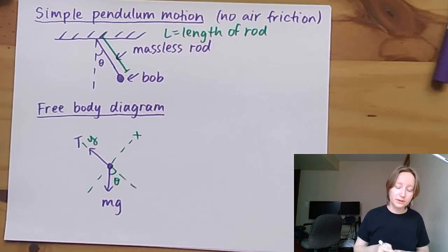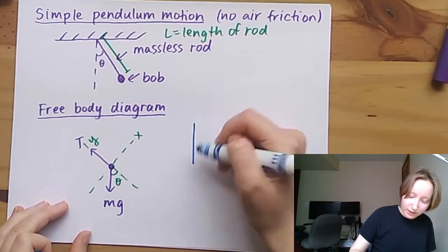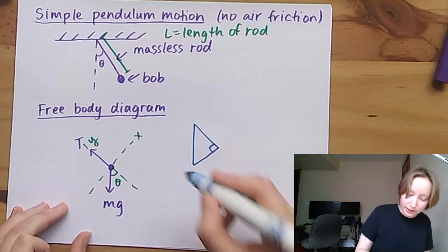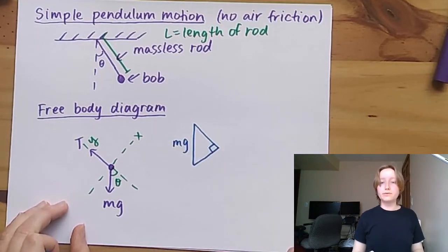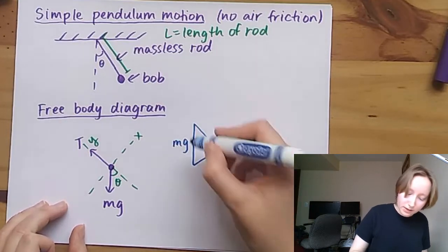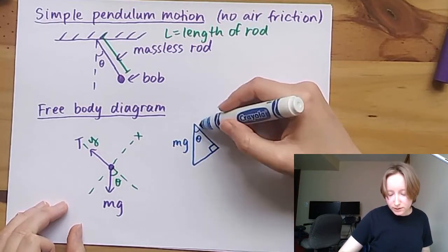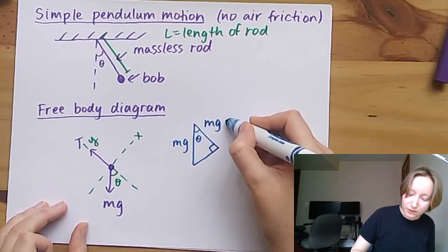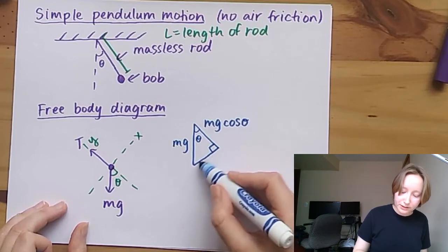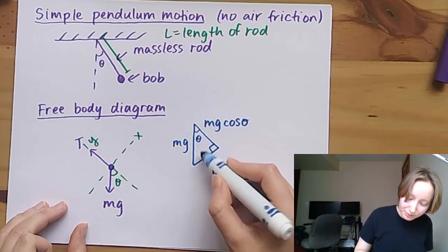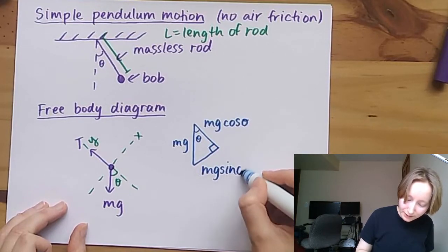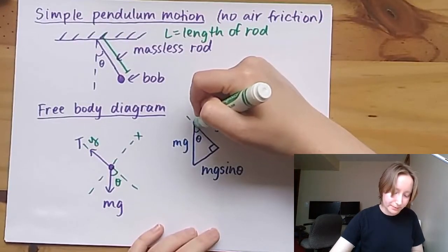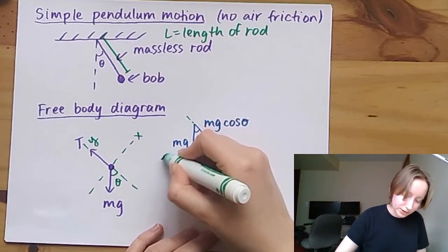Let's break apart the gravitational force into x and y components. It forms a right triangle where mg is the hypotenuse and the angle is theta. The component along the right-hand side is mg cosine theta, and the downward-looking force — the opposite side — is mg sine theta. So the gravitational force is broken into two pieces along the x and y directions.